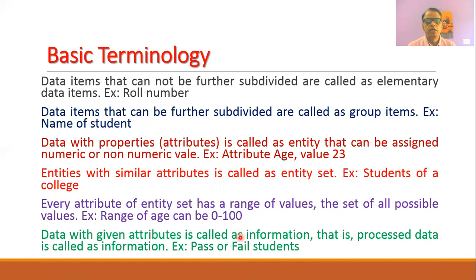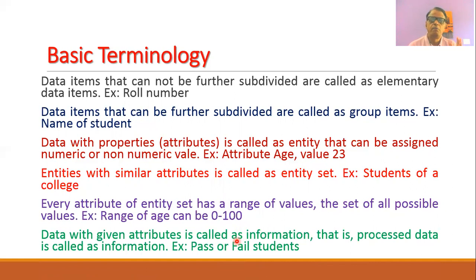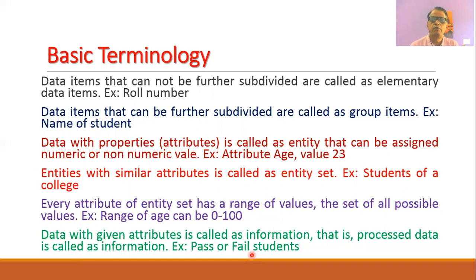Data with given attributes is called information. Whenever we process data, the result is called information. For example, when you have data of marks of students, you can process that data to obtain information such as who passed and who failed. So that result — pass or fail — is information obtained from the raw data of marks.